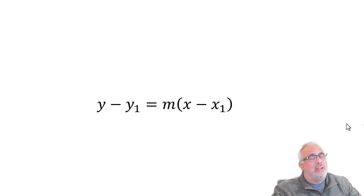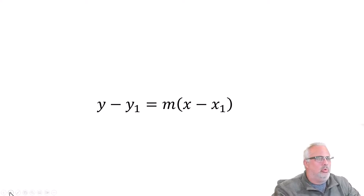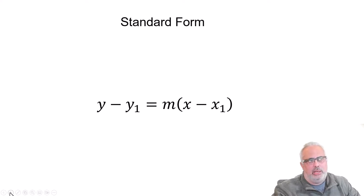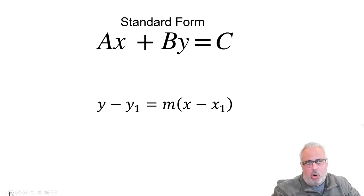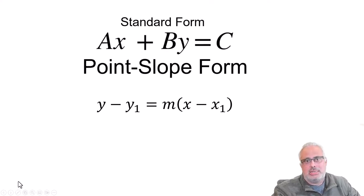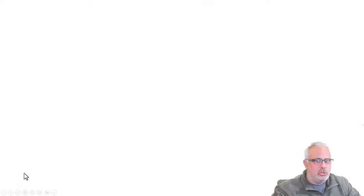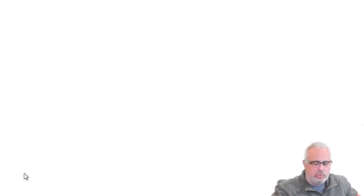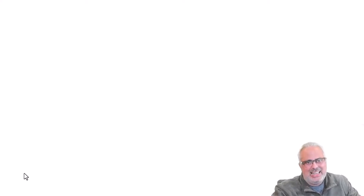The other form is the Standard Form. Standard Form is ax plus by equals c. So these are the two equations that, along with the slope-intercept form, represent the three forms — the three ways that we have to write the same linear function.